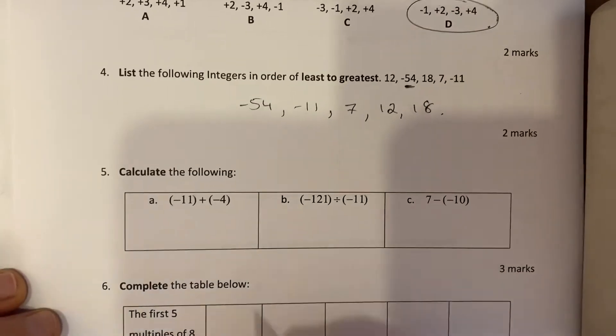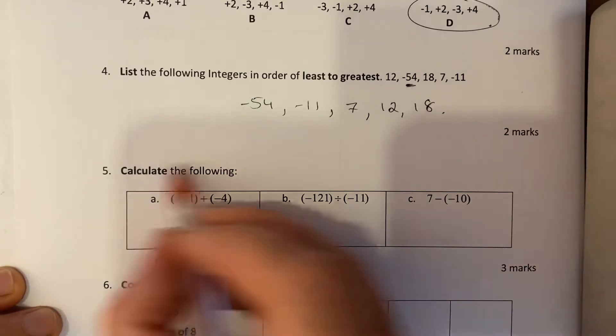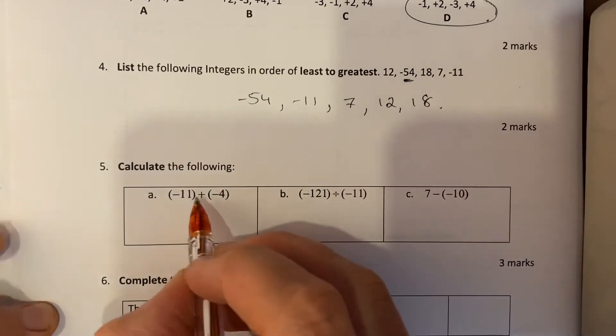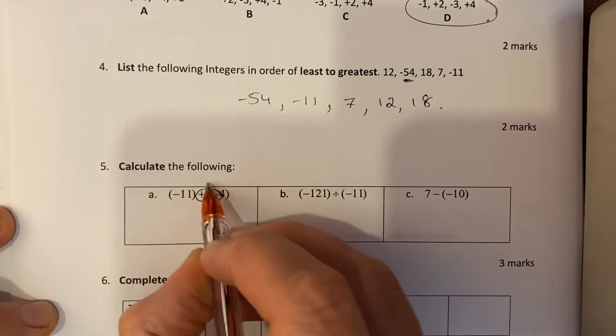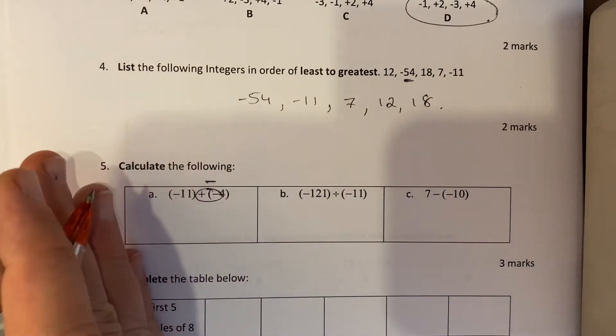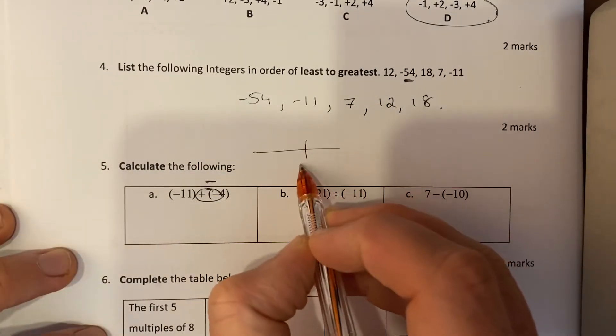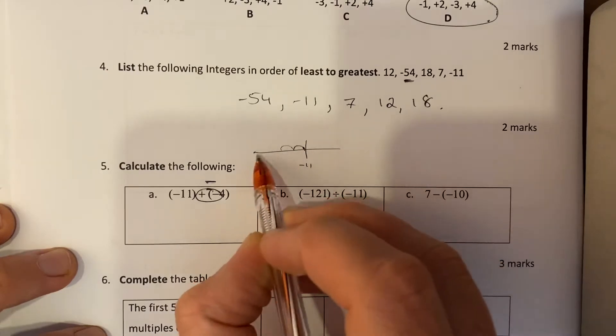Calculate the following: negative 11 plus minus 4. If you want you can sketch a number line here, but not necessary. A plus minus in a row like that is a minus, so negative 11 take away 4. Negative 11, go further back into the negative - if you're looking at your number line, here's negative 11, go further back 1, 2, 3, 4 and you end up at negative 15.